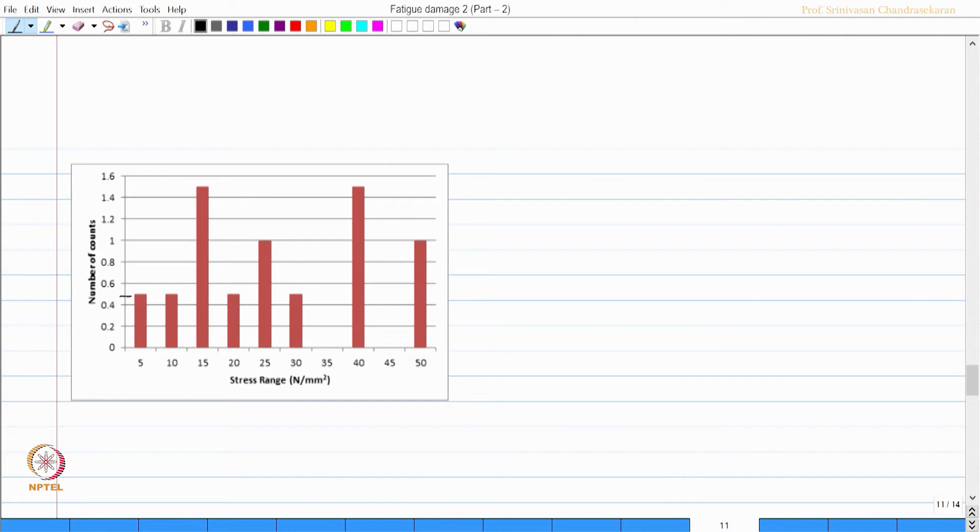Once I have the stress bin, I can calculate the N value. We know the equation log N is given by log A minus M log S. I now write down the values for all the stress range, stress range N, N and D which is n by capital N.